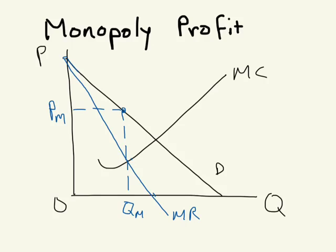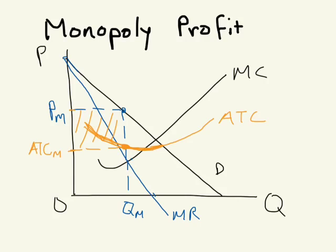Now it's time to think about monopoly profit. Let's add an average cost curve — remember that average cost and marginal cost must intersect at minimum average cost. To figure out monopoly profit, we ask: what's output? It's Q sub M. What's average total cost at Q sub M? We read that off the average total cost curve at Q sub M, giving us ATC sub M. Average profit is the distance between price and average total cost, and total profit is that average profit multiplied by output — the area of this rectangle.